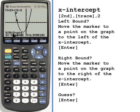And then it says right bound. So it wants me to move this marker to the right of where I want it. So I'll use the right arrow. I'll press enter again. And if we look up here, we can see these two arrows showing the area that the calculator is going to look to find the intersection, to find the x-intercept.